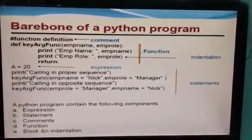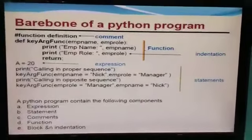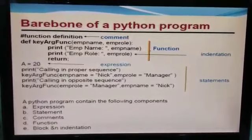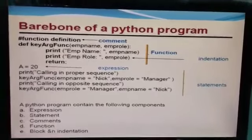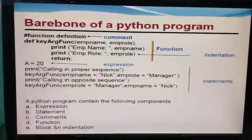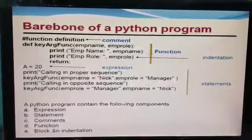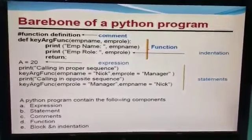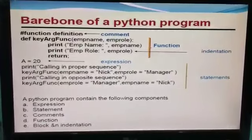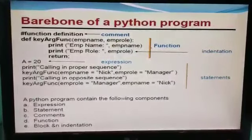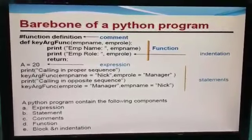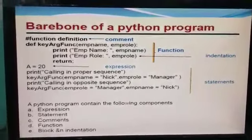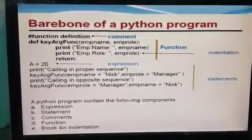Here we can see the bare bones of Python programs — the basic necessary elements which are used in Python programming. I have written an example and you can see what are the things we have marked in this program: comment, functions, indentation, expression, and statements. These are the 5 basic and important necessary elements we use in Python programming.